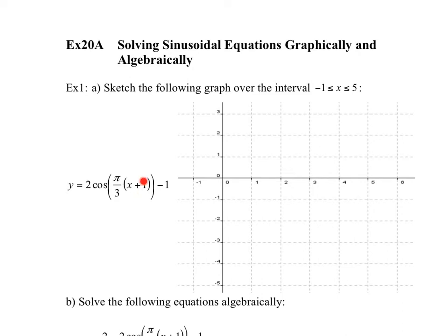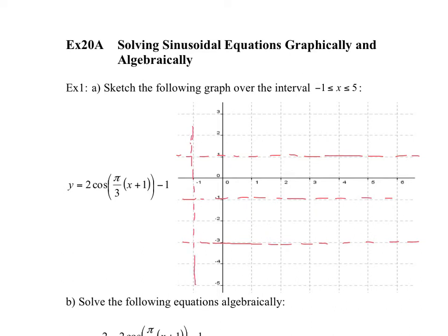Notice that the maximum — that's where the cosine graph starts — the maximum starts at negative 1. I know that the central axis is negative 1, so I'm going to draw my central axis. The amplitude is 2, so I have to go 2 above and 2 below the central axis. The graph is going to start at negative 1, and the cosine maximum value will be at negative 1.